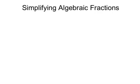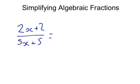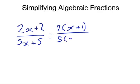As a quick reminder from the previous video, we looked at algebraic fractions such as 2x plus 2 over 5x plus 5. To simplify that, we had to first factorise both the top and the bottom to find common factors. So on the top we got 2(x plus 1), and on the bottom we got 5(x plus 1). Then we could cancel out the x plus 1 on the top and on the bottom, which left us with a final answer of just 2 fifths.